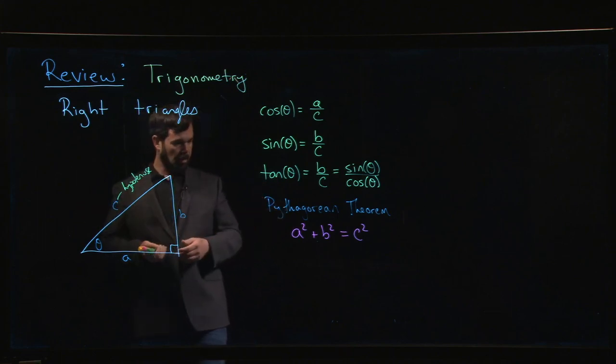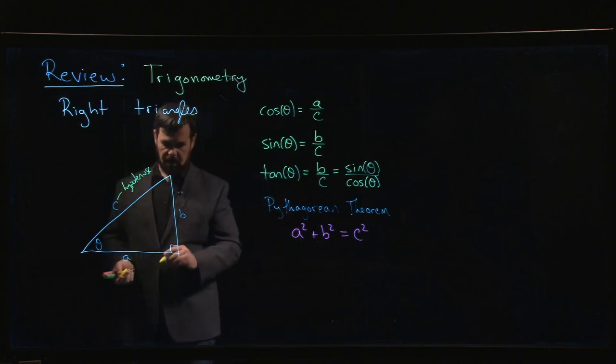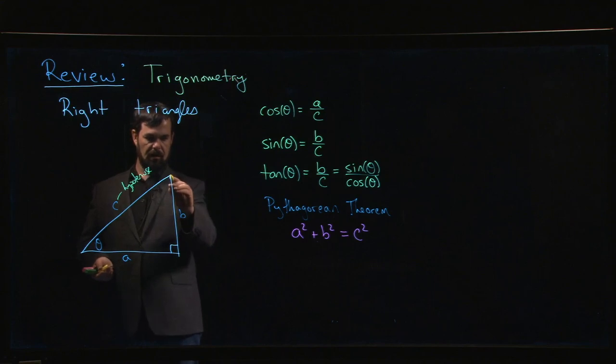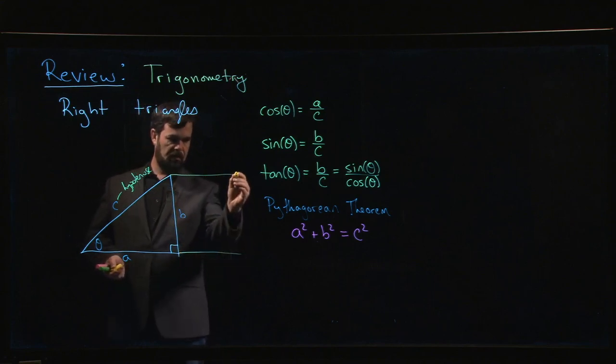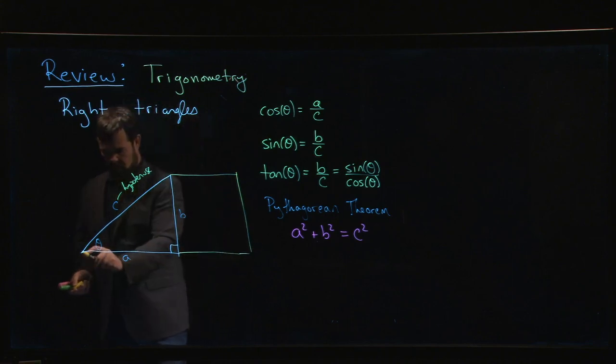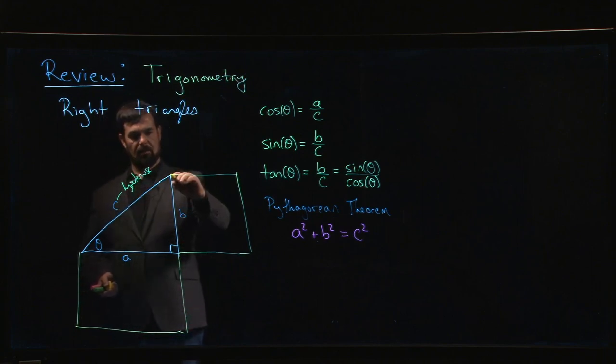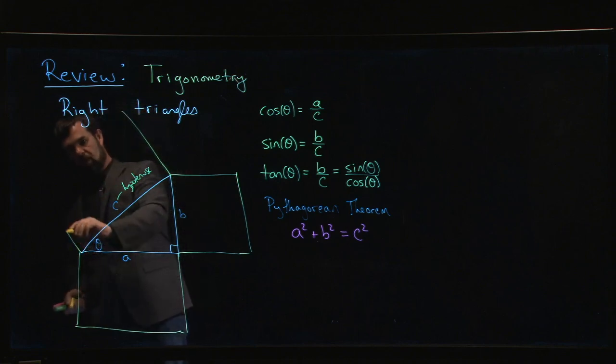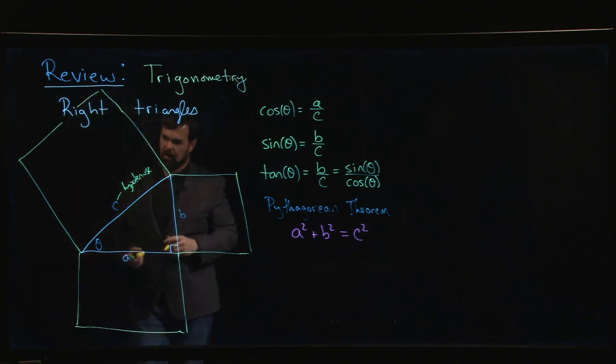One way to think about the Pythagorean theorem, you can think of it as a relationship between areas, between the area of a square of side length B, a square of side length A. If you add up the area of those two squares, you should get the area of a square with side length C.